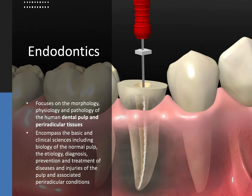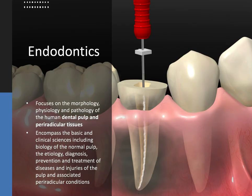Endodontics is the branch of dentistry concerned with the morphology, physiology, and pathology of the human dental pulp and peri-radicular tissues — those are tissues near and around the root of the tooth. Its study and practice encompasses the basic and clinical sciences, including biology of the normal pulp, the etiology, diagnosis, prevention, and treatment of diseases and injuries of the pulp, and associated peri-radicular conditions. Endodontics is all about saving natural teeth, because even an implant is not a perfect replacement for a natural tooth.